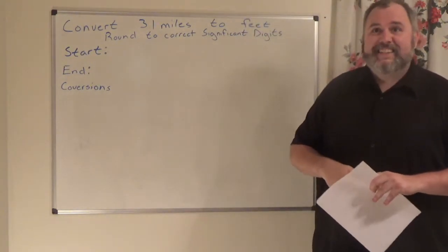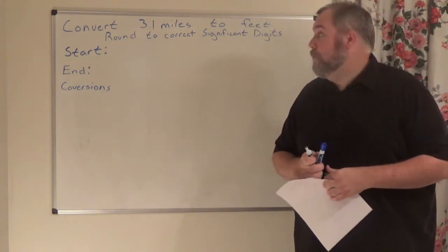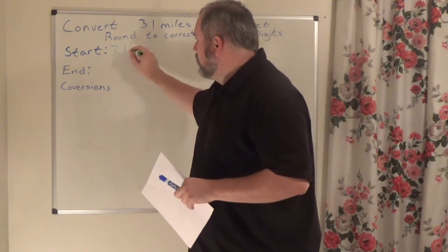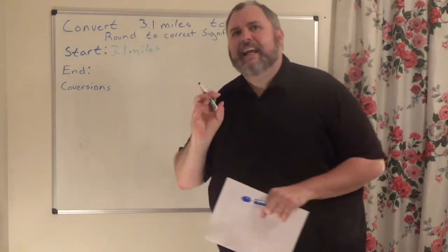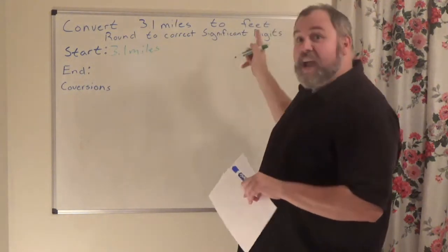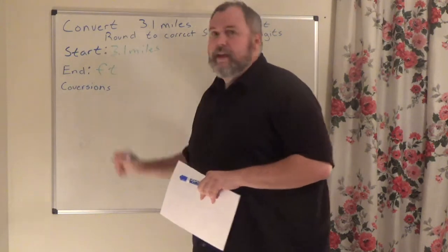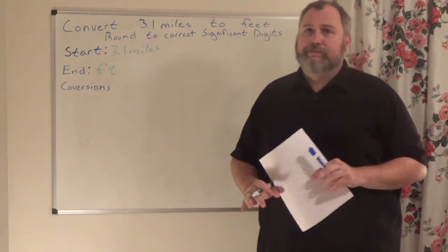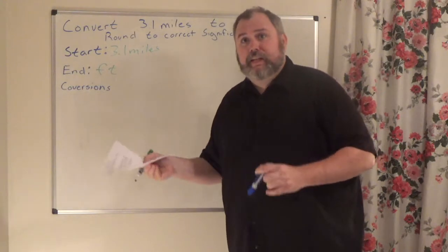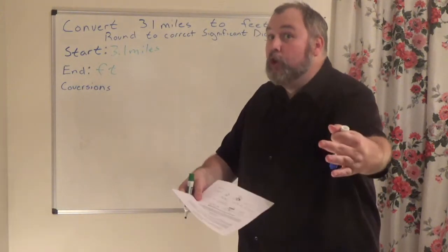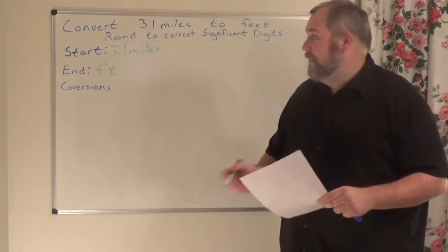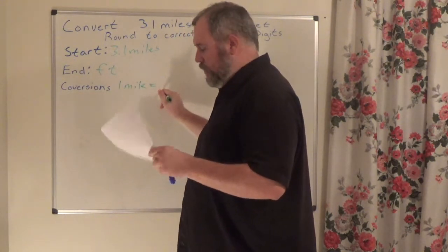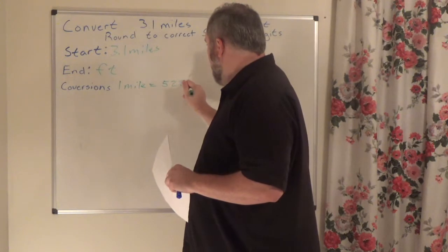For this problem: convert 3.1 miles to feet. Where am I starting? I am starting at 3.1 miles. What's my end game? I am trying to get to feet. I need to know how to get there, so I've got to find the conversion factors. I'll look at my formula sheet, and I can see that one mile is equal to 5,280 feet. This is my game plan — I have a direct route that gets me from miles to feet.